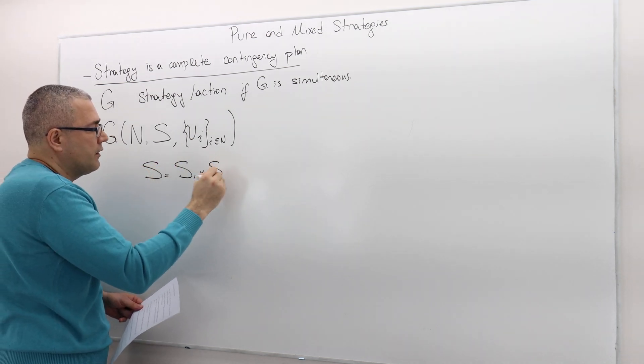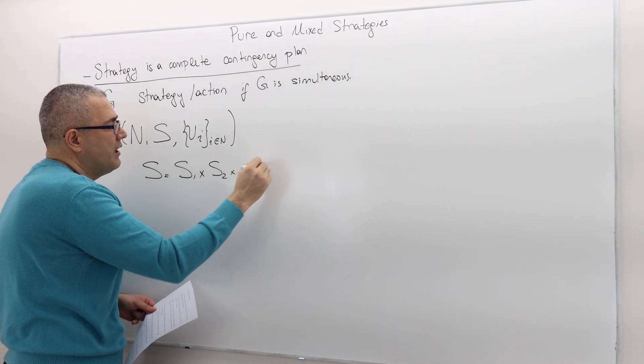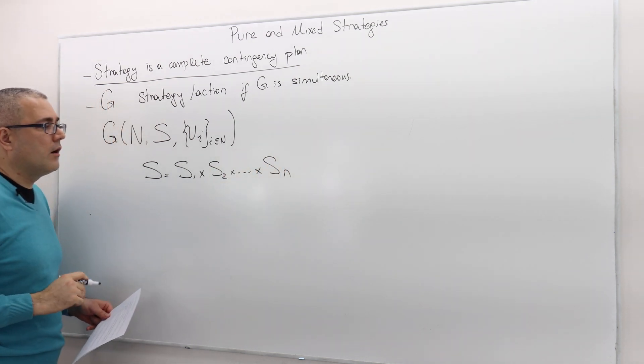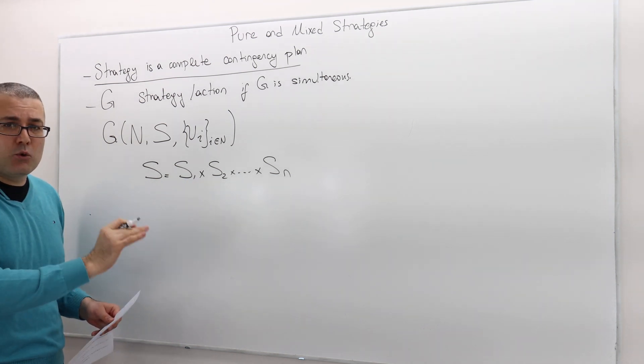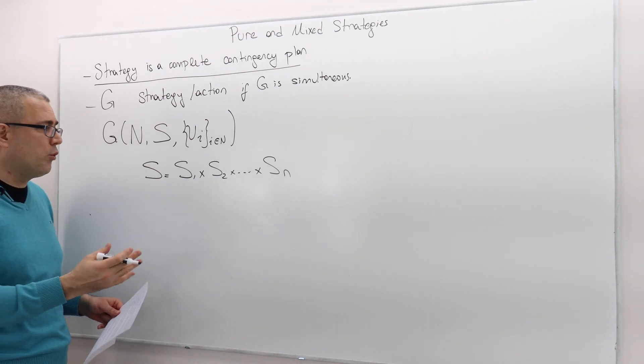S1 cross S2 cross. So this is a Cartesian product. We are basically multiplying the strategy set of all the players in an order. So the exact order is important.